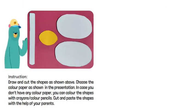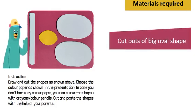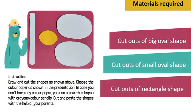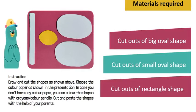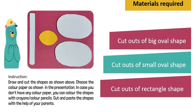A fun activity. Materials required for this activity are cutouts of big oval shape, cutouts of small oval shape, and cutouts of rectangle shape. Draw and cut the shapes as shown above. Choose the color paper as shown in the presentation. In case you don't have any color paper, you can color the shapes with crayons or color pencils. Cut and paste the shapes with the help of your parents. Let us start with the activity.